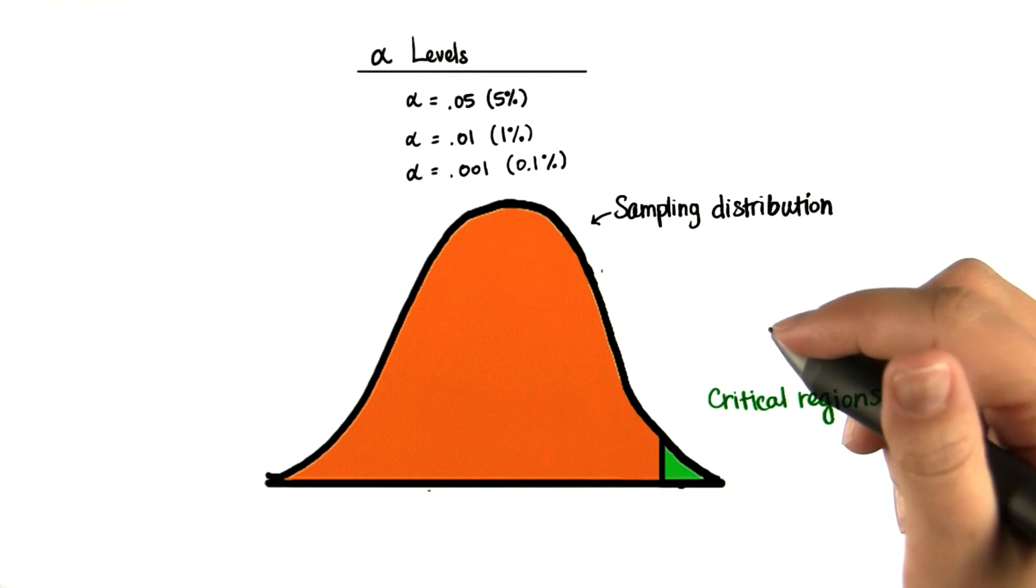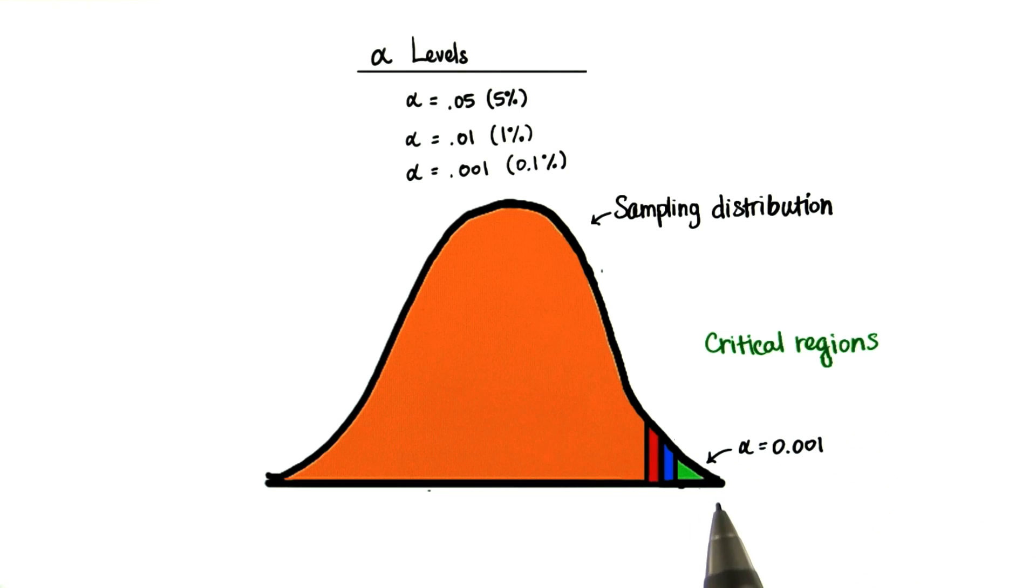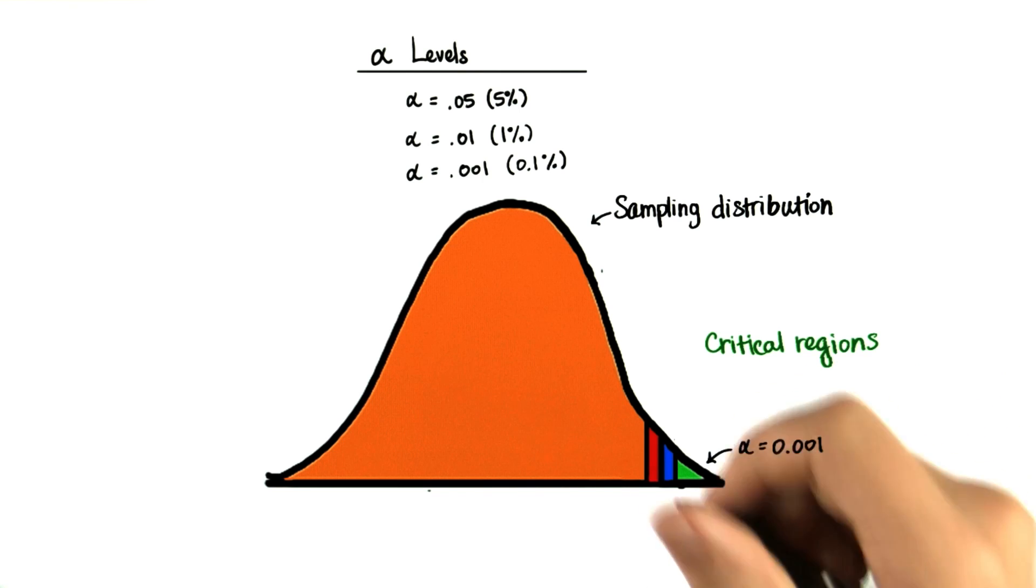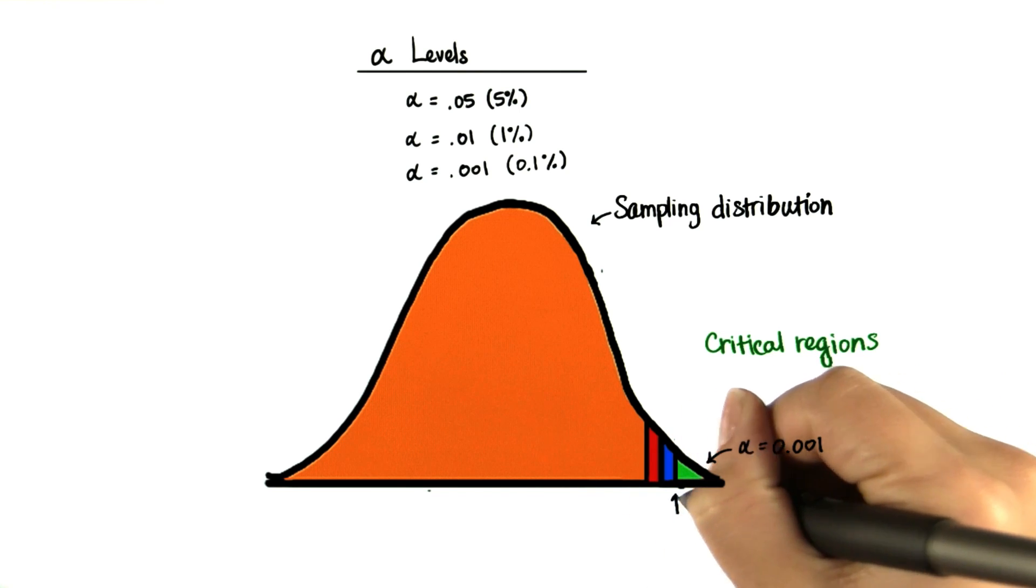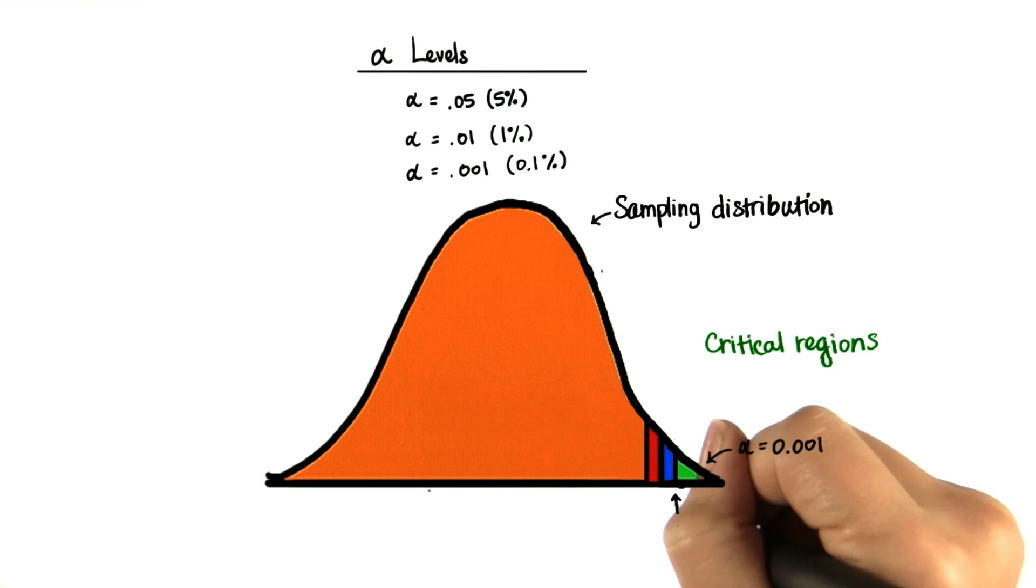So let's blow up our sampling distribution a little bit. We have three critical regions. The smallest one has a probability greater than this z-score of 0.001, and this z-score here is 3.08.